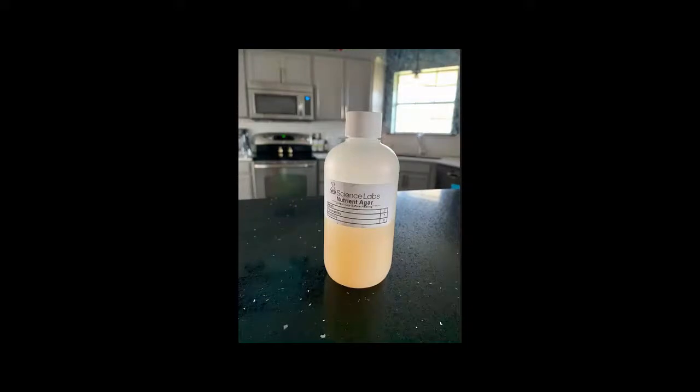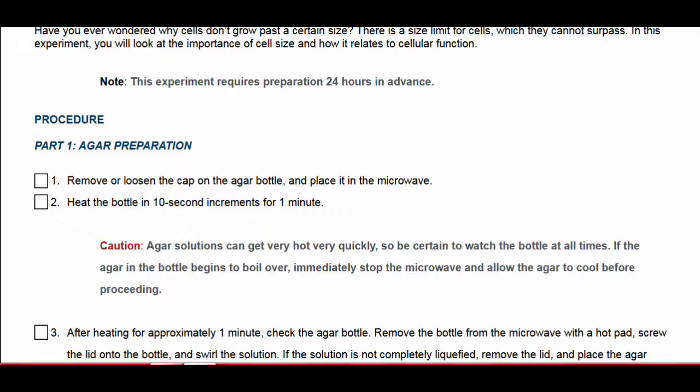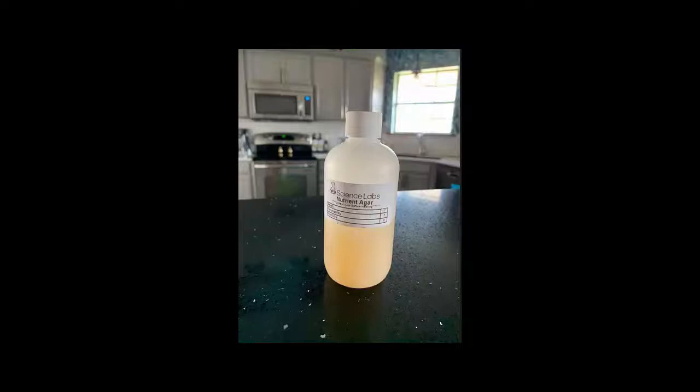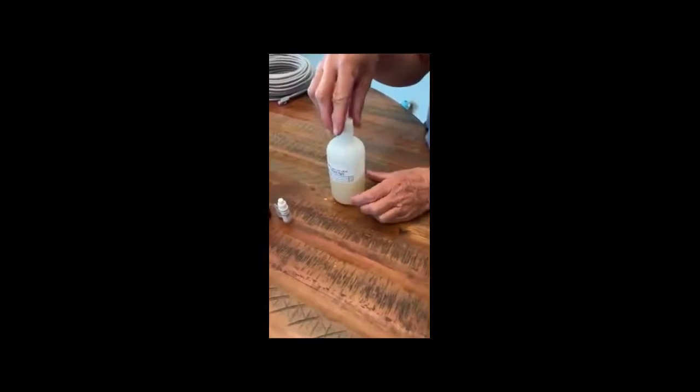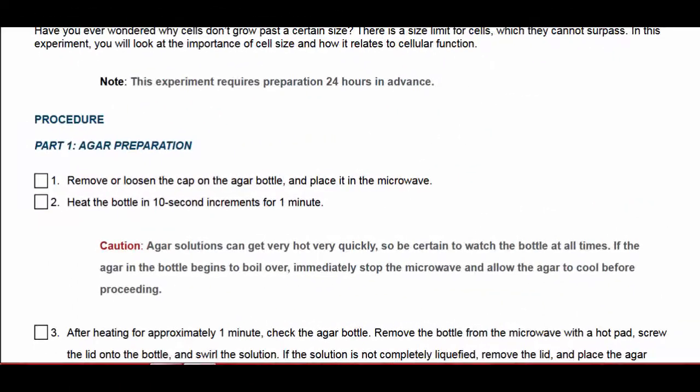This is the starting lineup — this is an agar bottle used for a lot of different things, but you're going to heat this up in a microwave. Remove and loosen the cap of the agar bottle and place it in the microwave. Agar is used in microbiology labs to grow microbes, but here we're going to heat it up and turn it to liquid. Loosen the cap — you can take it off or leave it on — put it in the microwave, shut the door. After heating in 10-second cycles, you can see it starts to loosen up. After about a minute it's fully heated; it can be really hot, so be careful taking it out.